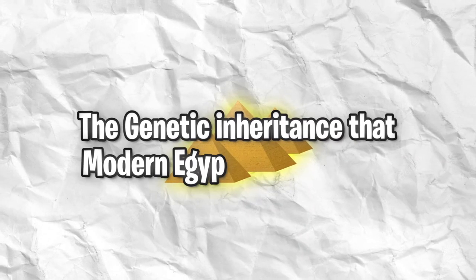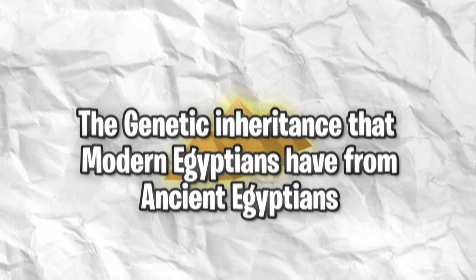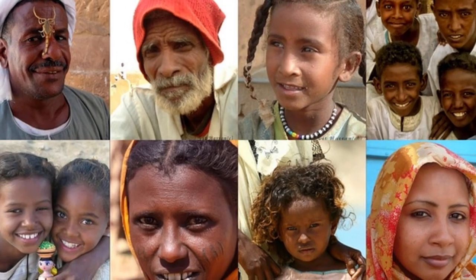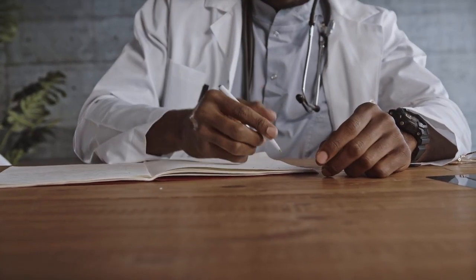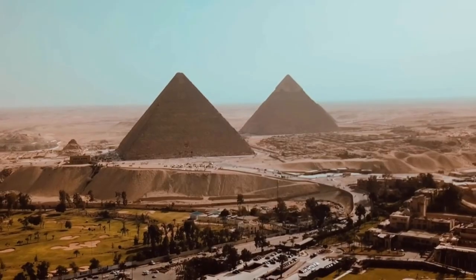In this video, I'm going to be talking about the genetic inheritance that modern Egyptians have from ancient Egyptians. Modern Egyptians are descendants of populations that lived in ancient Egypt. We're going to look at ancestry that modern Egyptians inherit from their ancient Egyptian ancestors, examining DNA samples from the Middle Kingdom, the Late Period, and the Hellenistic periods.